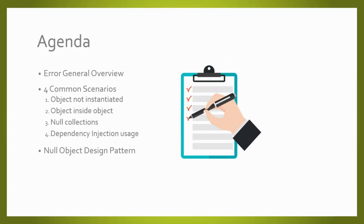This is today's agenda. First, a brief technical introduction about the error and why it happens — I'm going to break down its error message so you understand why it occurs. Then I'll dive into the four most common scenarios when we have this issue, and for each scenario, we'll look at best practices to avoid it. To finish, I'll be talking about the Null Object design pattern and how to use it to avoid this exception.